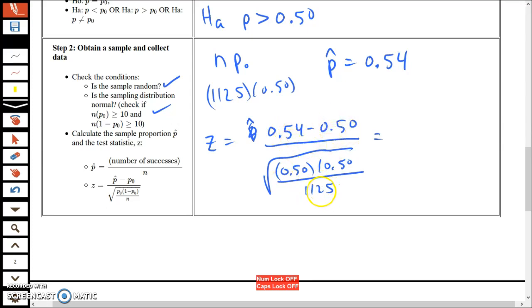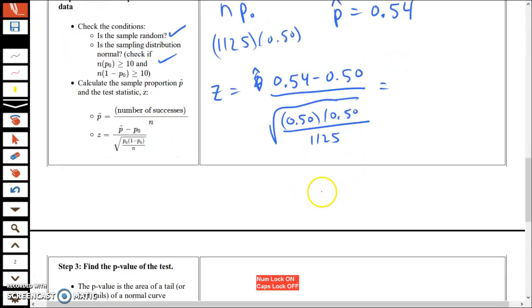We want to know how far apart the sample proportion is from the null hypothesis in terms of standard errors. On a calculator I got 0.0149, that's the denominator. On top we have 0.04.